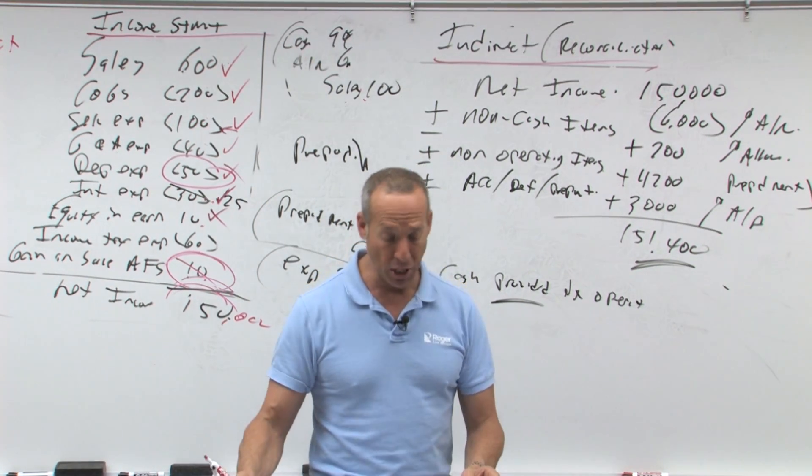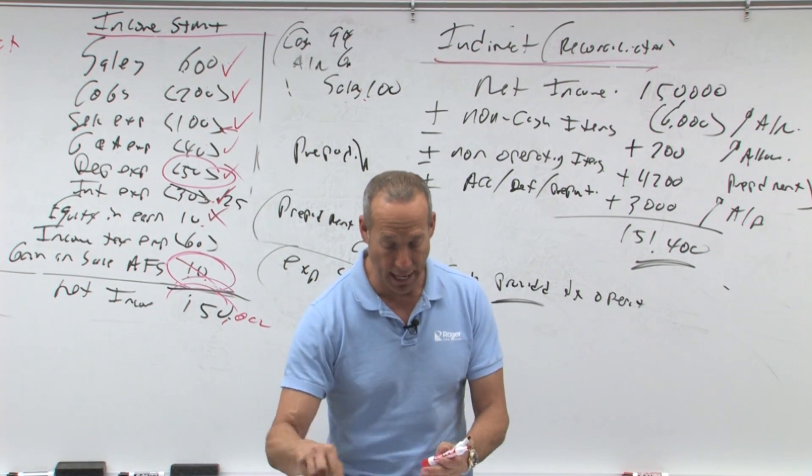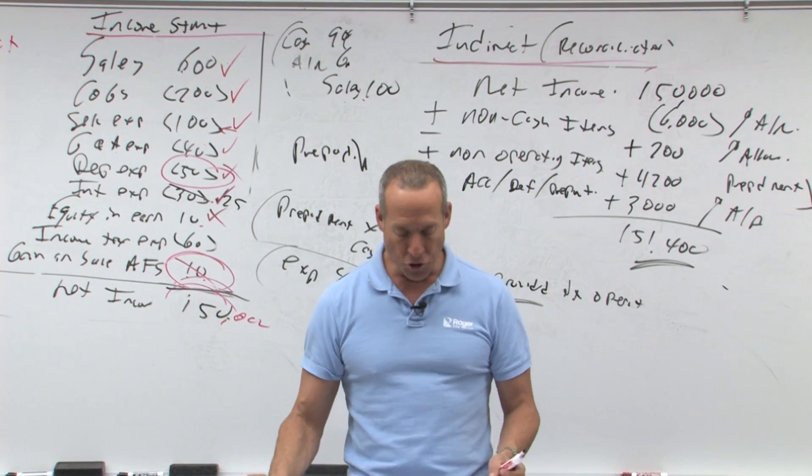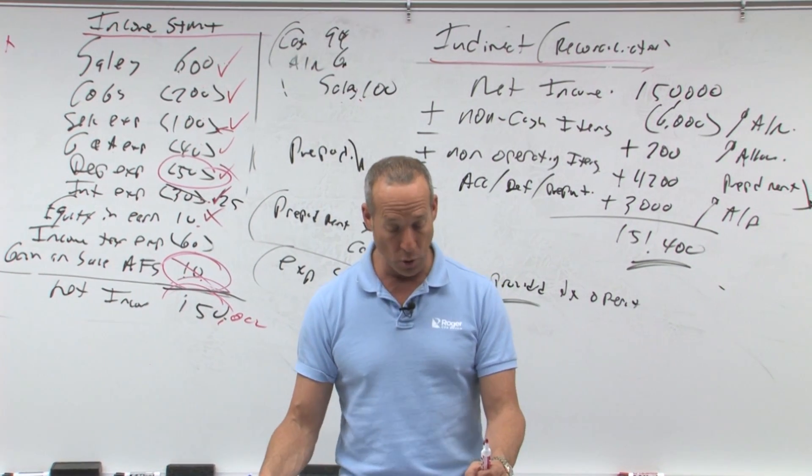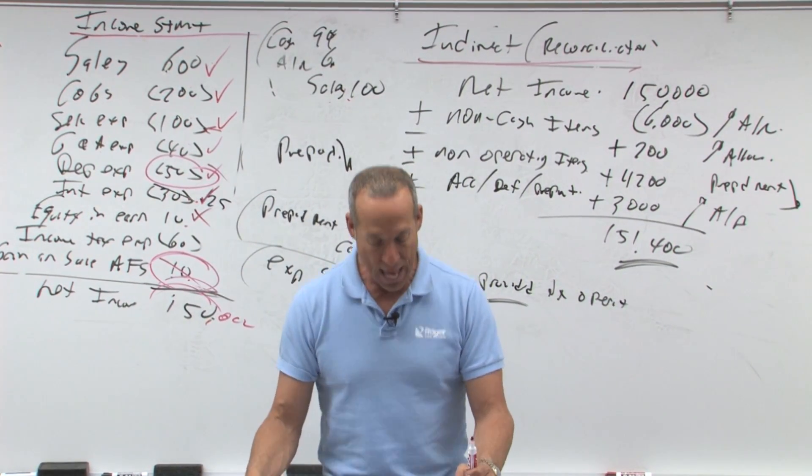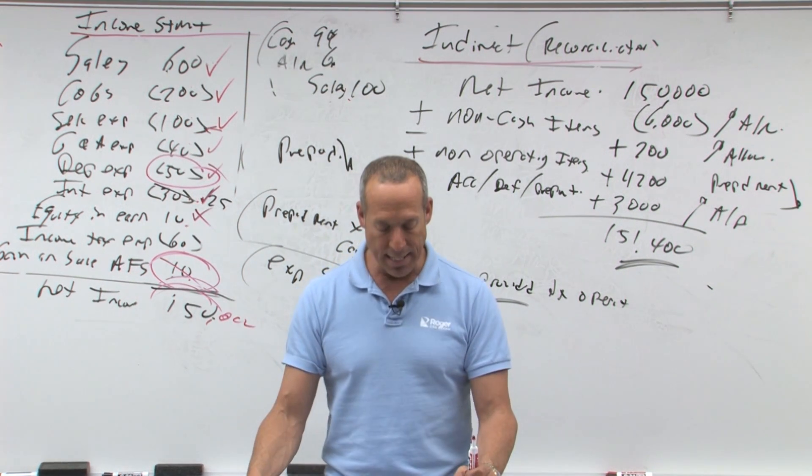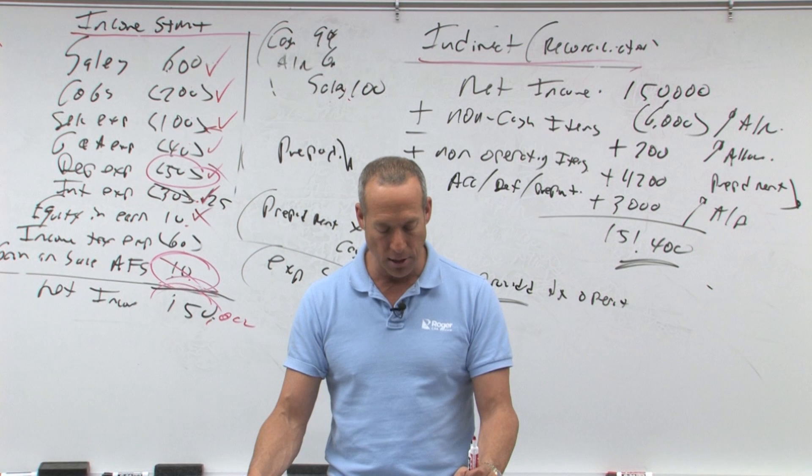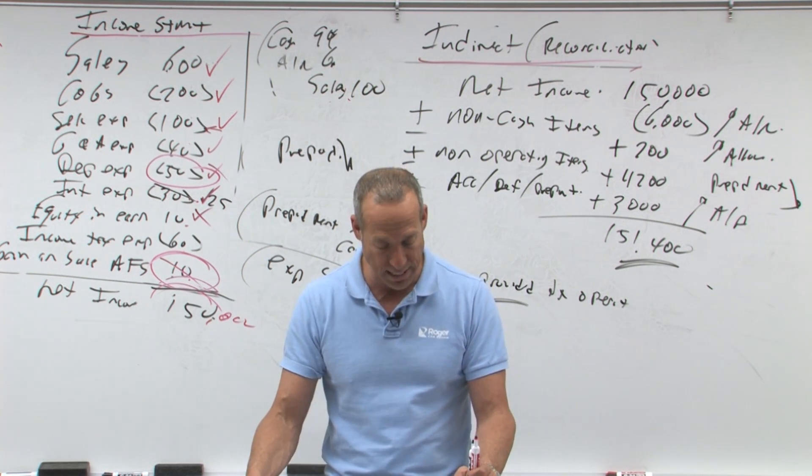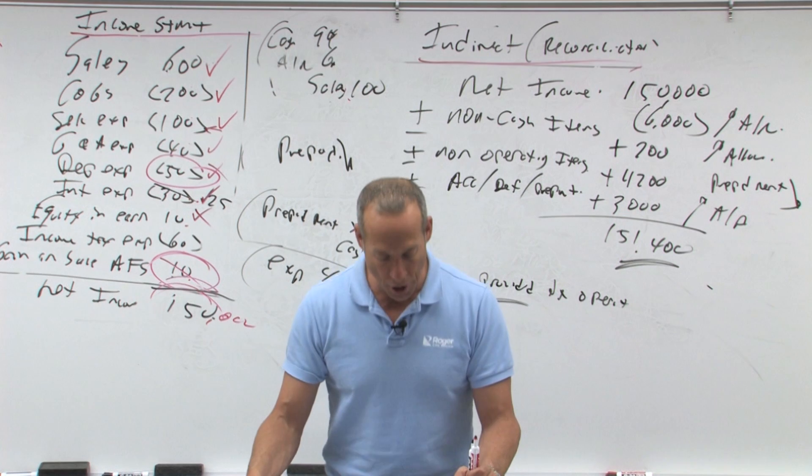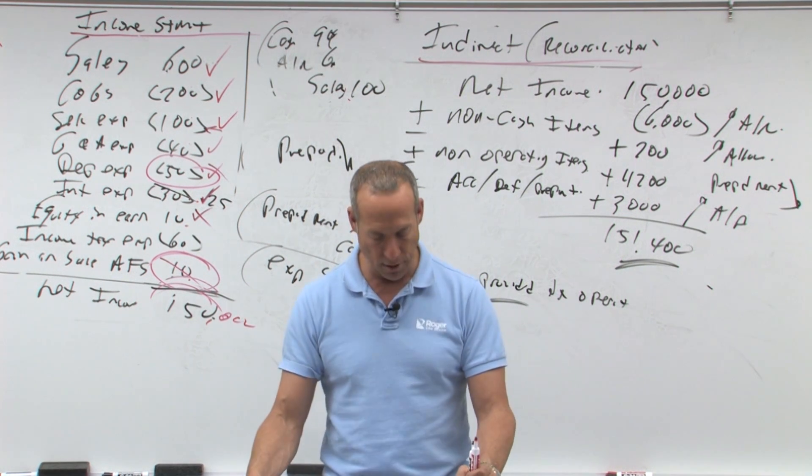Alright, Bob, a consultant, keeps his accounting records on a cash basis. During the current year, Bob collected $200,000 in fees from clients. At December 31st of the previous year, Bob had accounts receivable of $40,000, and at December 31st of the current year, Bob had accounts receivable of $60,000, so that means accounts receivable went from 40 to 60, and unearned fees of $5,000.